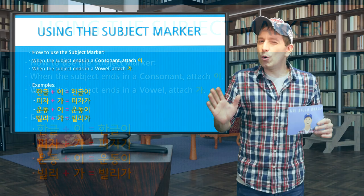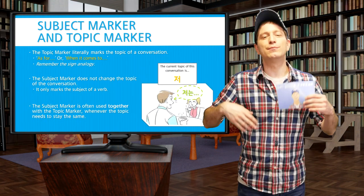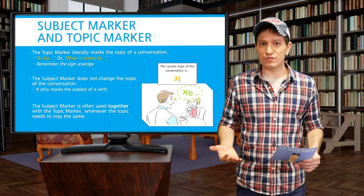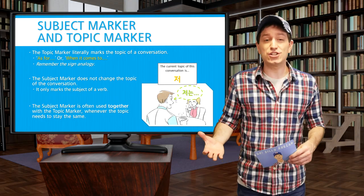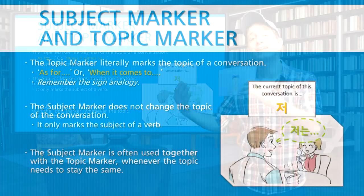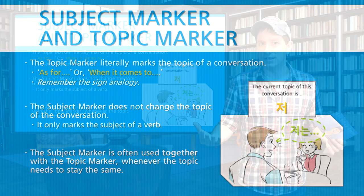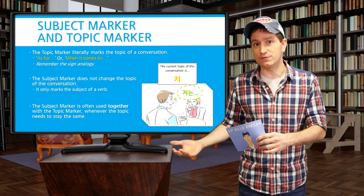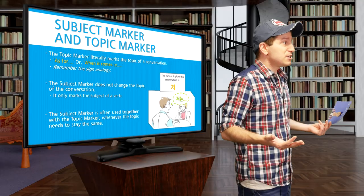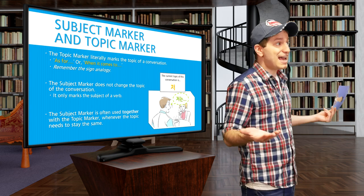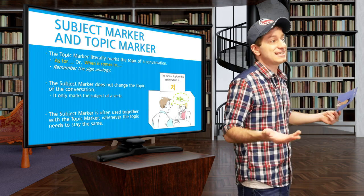So let's do a quick review. The topic marker marks the topic of whatever you're talking about, so this can translate as 'as for' or 'when it comes to' — remember that sign analogy. The subject marker, however, does not change the topic of whatever it is you're talking about. All it does is mark the subject of a verb — an action verb or a descriptive verb. In fact, the subject marker and the topic marker can even be used together whenever the topic needs to stay the same.